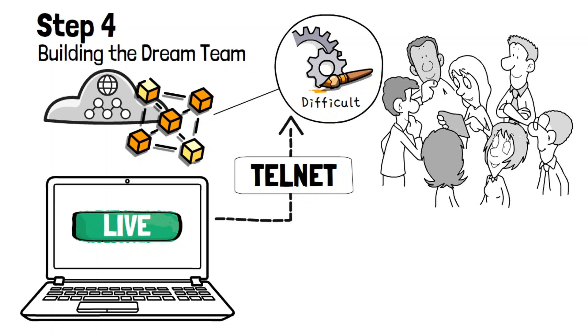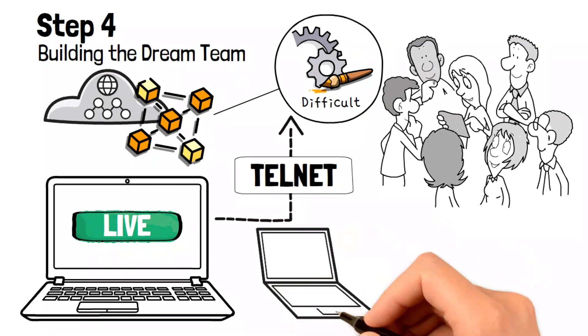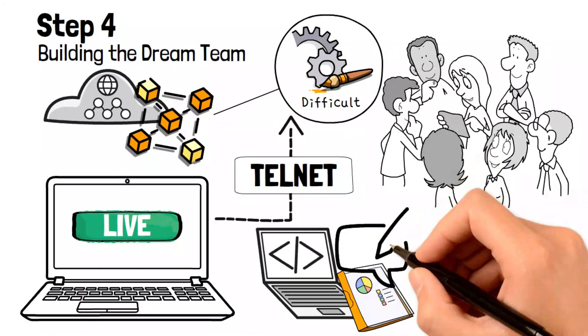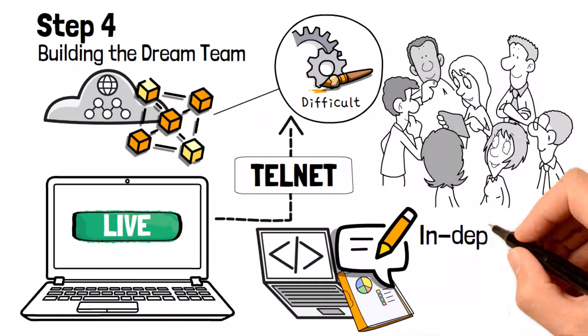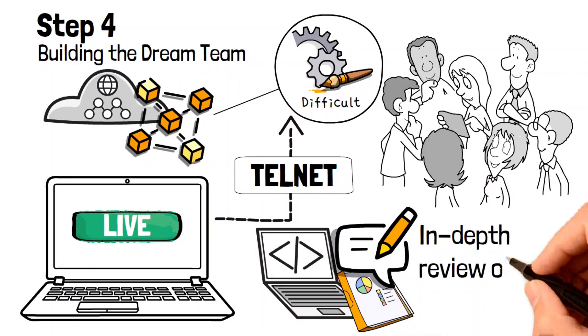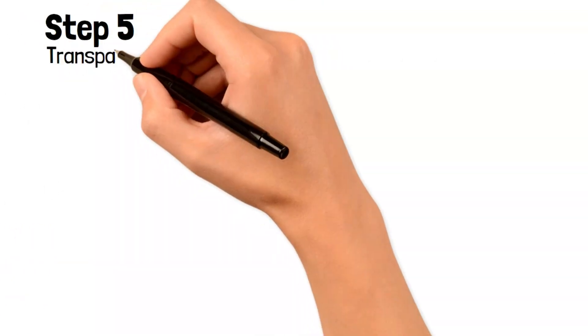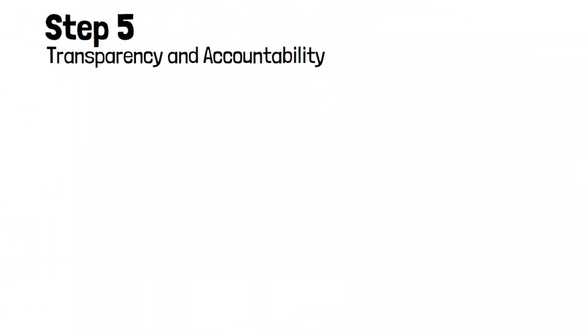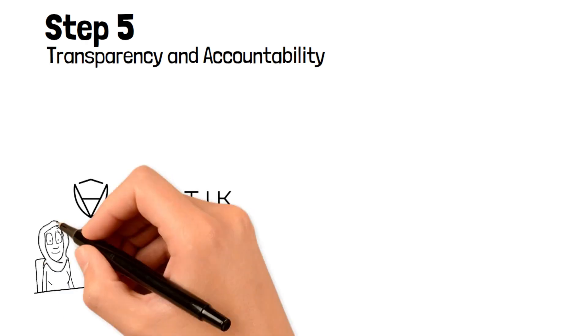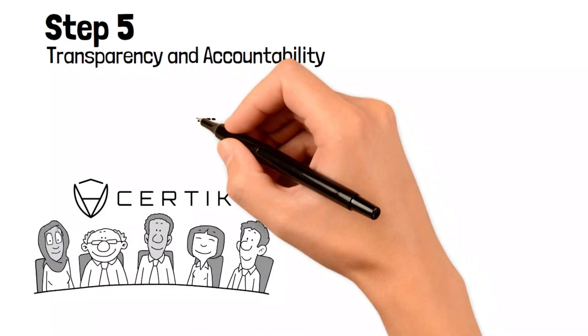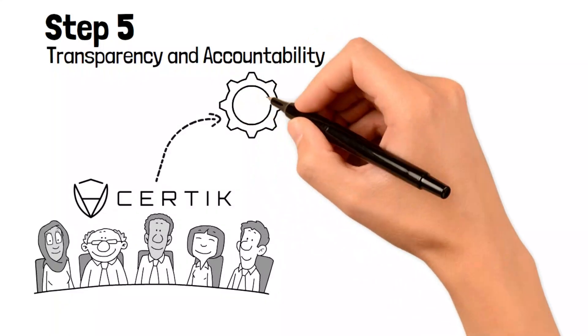Consider collaborating with a dedicated development team to successfully build and deploy your blockchain project for the best results. Step Five: Transparency and accountability. During auditing, Certik conducts an in-depth review of your code base, meticulously analyzing every aspect to identify potential vulnerabilities and weaknesses.